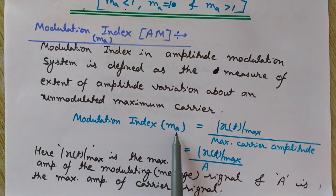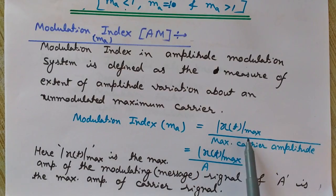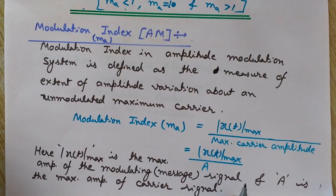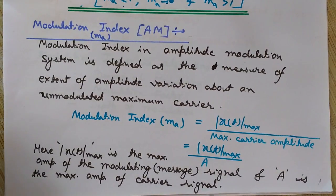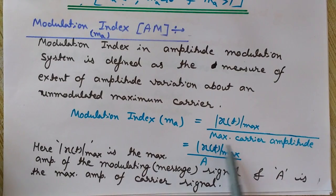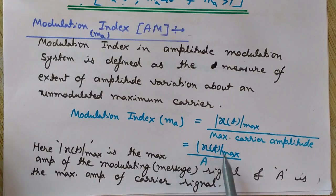The modulation index is denoted by ma, where 'a' stands for amplitude modulation. ma is defined as xt_max divided by the maximum carrier amplitude A. Here, xt_max is the maximum amplitude of the modulating or message signal, and A is the maximum amplitude of the carrier wave. So ma is simply the ratio of the maximum amplitude of the modulating signal to the maximum amplitude of the carrier wave.